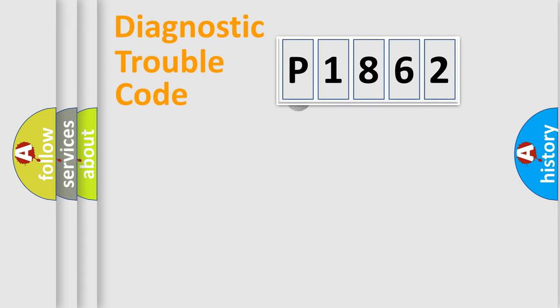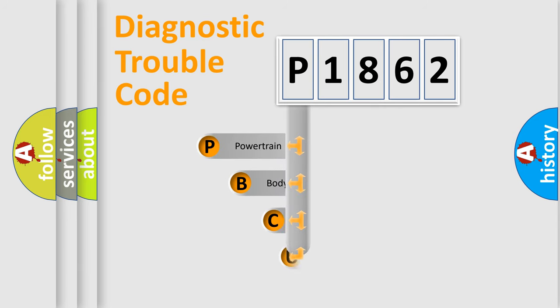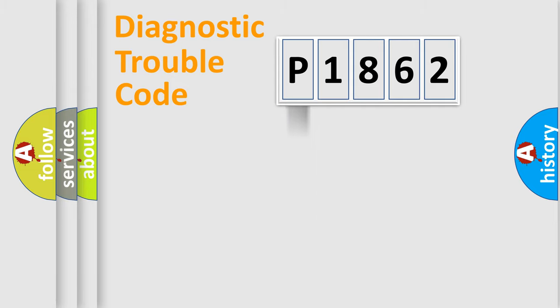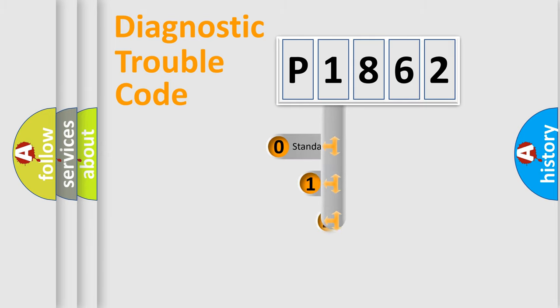Let's look at the history of diagnostic fault code composition according to the OBD2 protocol, which is unified for all automakers since 2000. We divide the electric system of an automobile into four basic units: Powertrain, Body, Chassis, and Network. This distribution is defined in the first character of the code.